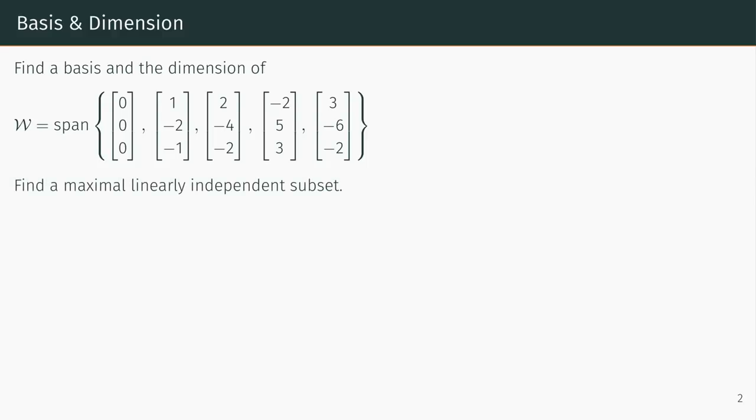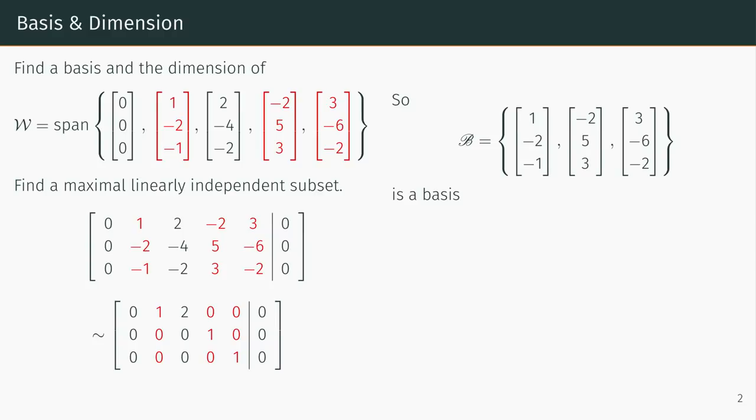The procedure is familiar. Put the vectors as columns in an augmented matrix, row reduce, and pick vectors corresponding to the pivot columns. Thus, we see the span of B is W, and the vectors in B are linearly independent, and so B is a basis.